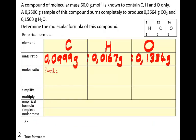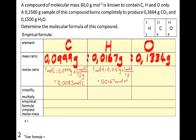How many moles of carbon is 0.0999 grams, given that 1 mole of carbon has a mass of 12 grams? Answer: 0.0083 moles of carbon. How many moles of hydrogen atoms in 0.0167 grams, given 1 mole of hydrogen atoms has mass 1 gram? That gives 0.0167 moles of hydrogen. How many moles of oxygen atoms in 0.1334 grams, given 1 mole of oxygen atoms has mass 16 grams? 0.1334 divided by 16 gives 0.0083 moles of oxygen.